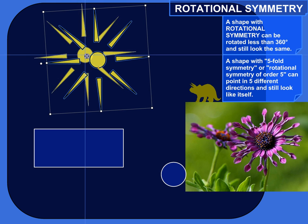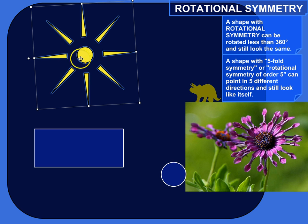We can determine whether this star has rotational symmetry by making a new star, rotating it around. Can I rotate it and get it to line up with itself exactly? That's not quite it. That is not quite it. There we go.